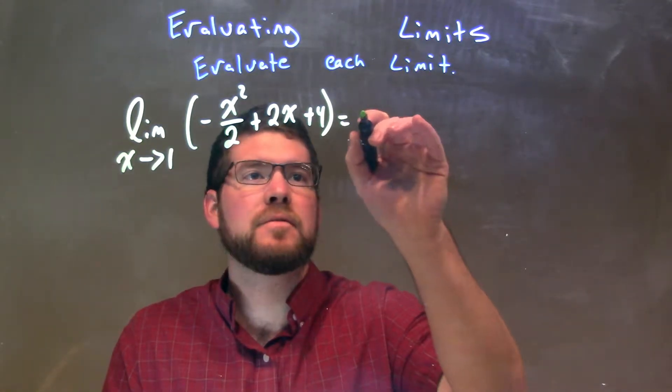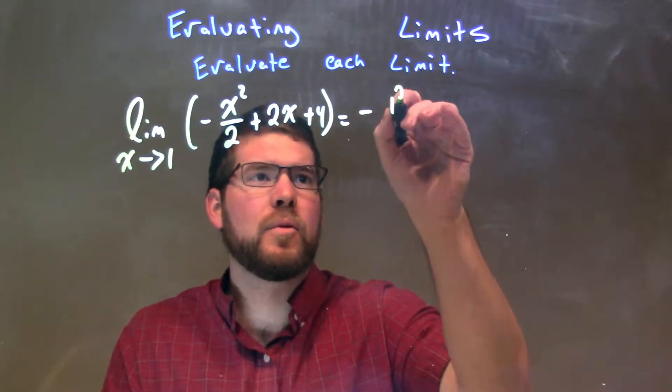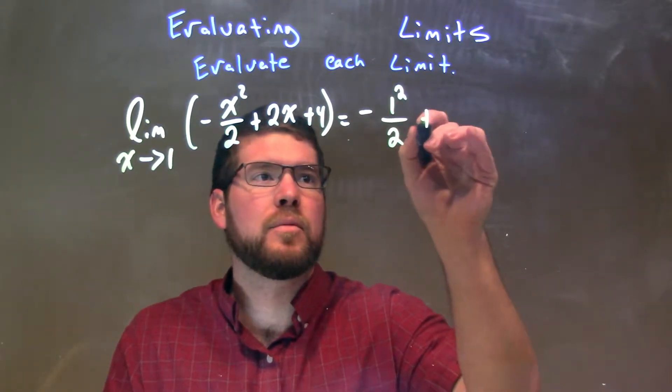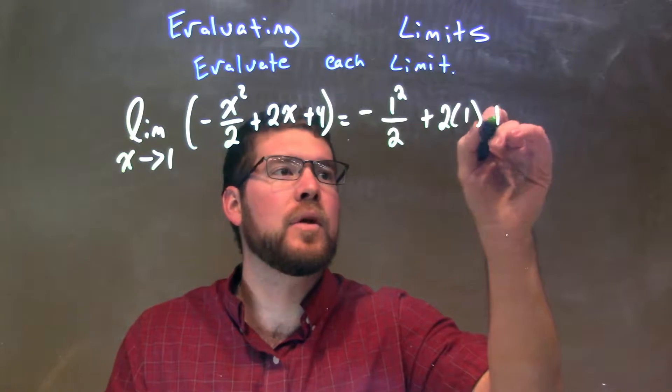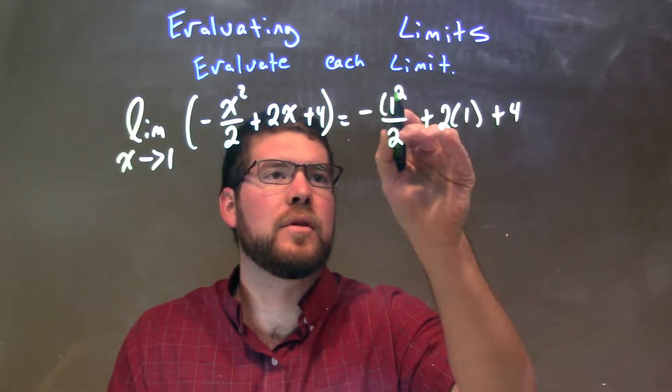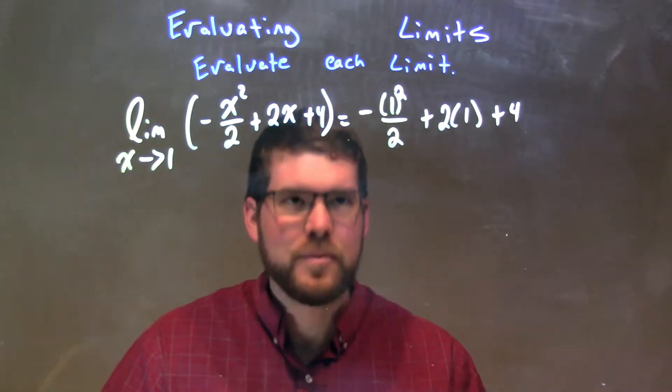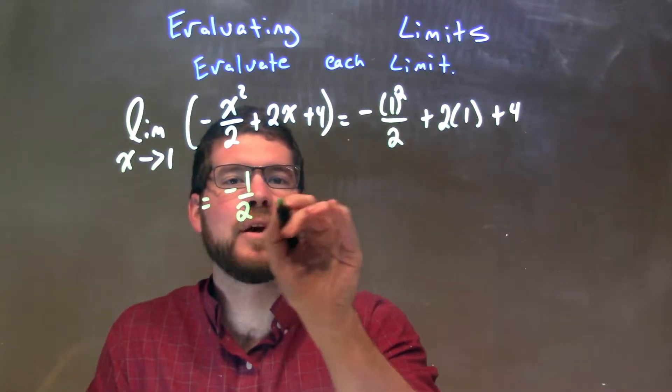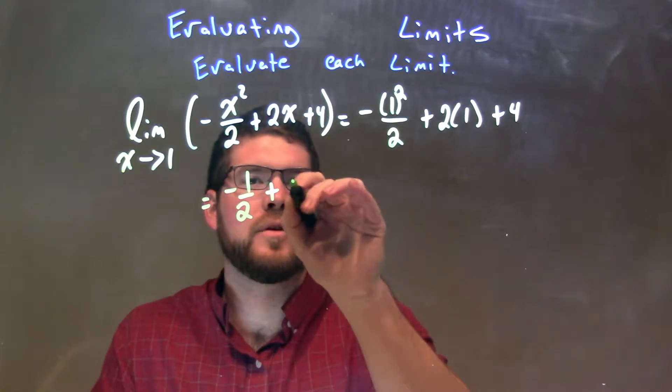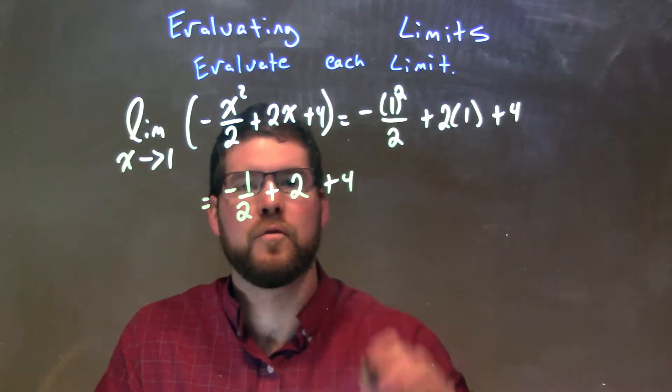So we have negative 1 squared over 2 plus 2 times 1 plus 4. Well, 1 squared is 1. We're going to make it out front, so we have a negative 1 half right here plus 2 times 1 is 2 plus 4.